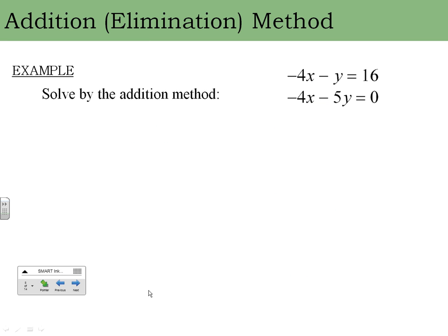Each example gets a little harder. On this one, adding the equations as-is gives me negative 4x plus negative 4x, which is negative 8x, and negative 1y plus negative 5y is negative 6y — nothing cancels. In the previous example, having the same coefficient was good, but here both x-coefficients are negative. I need opposite signs so they'll cancel, so I'll multiply one equation by negative 1.